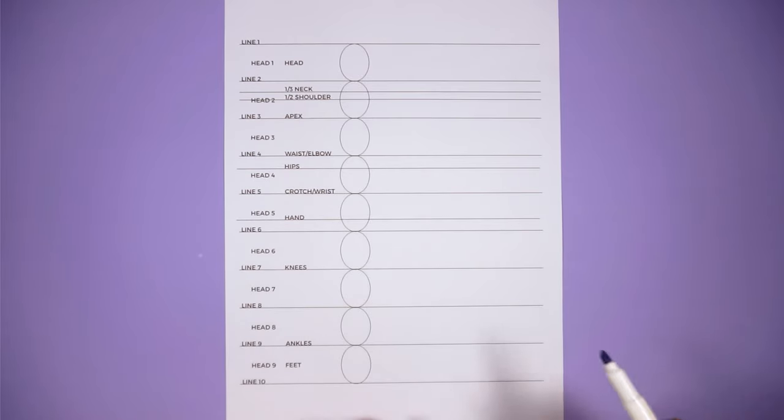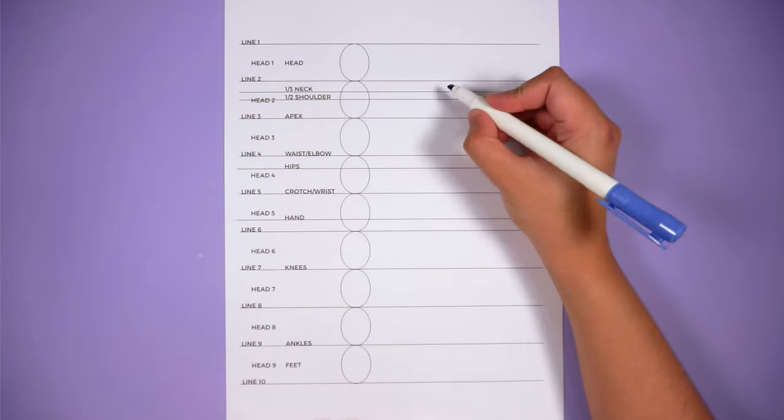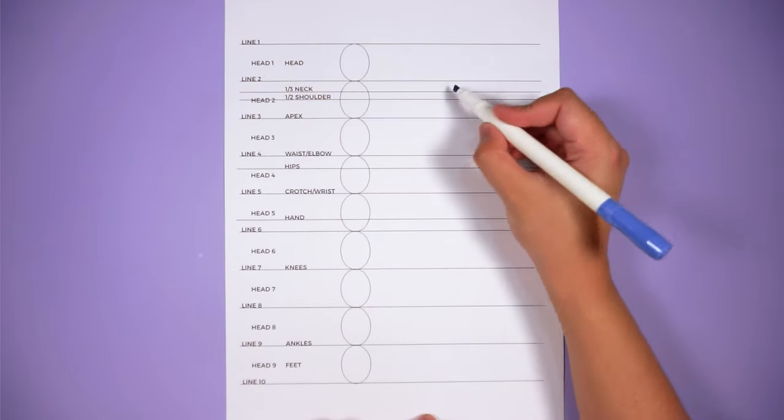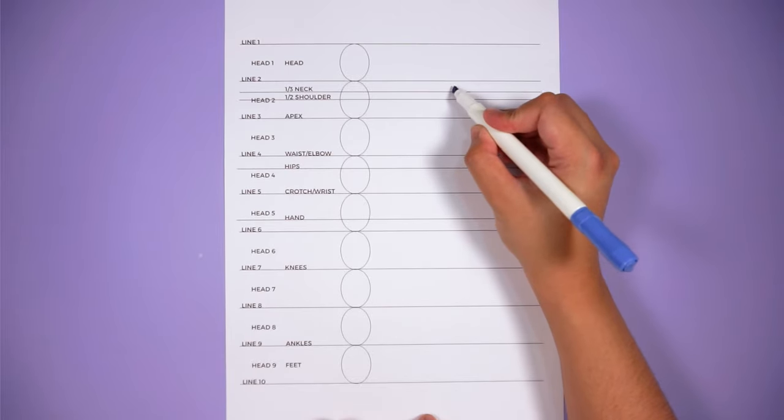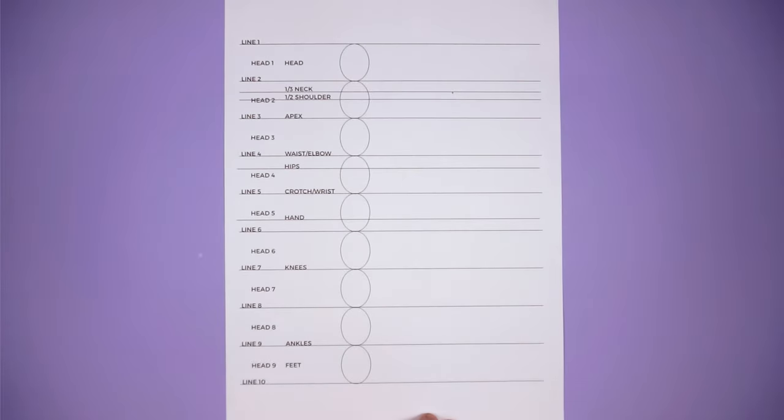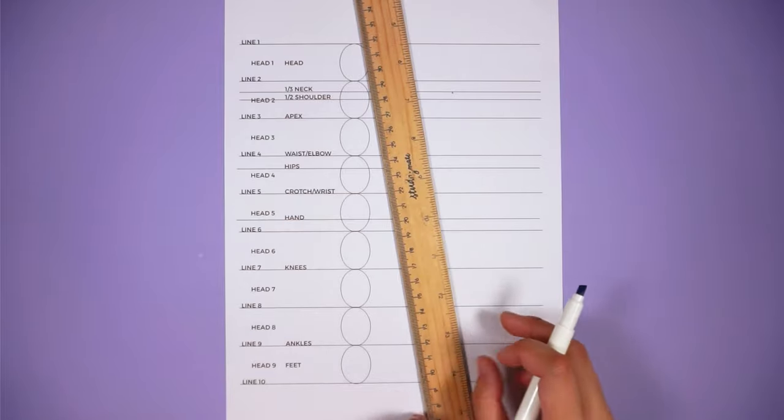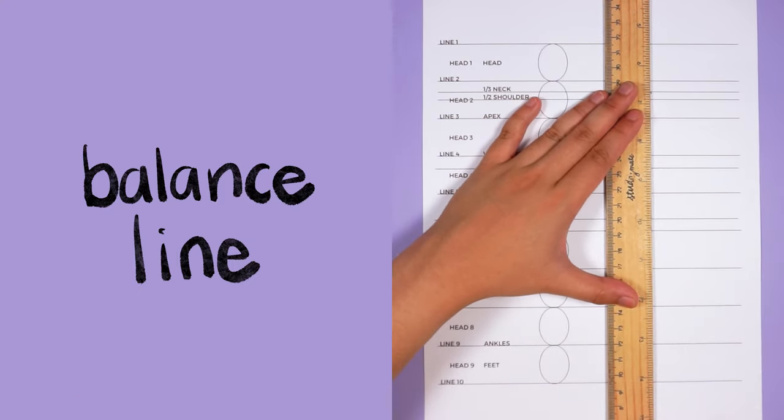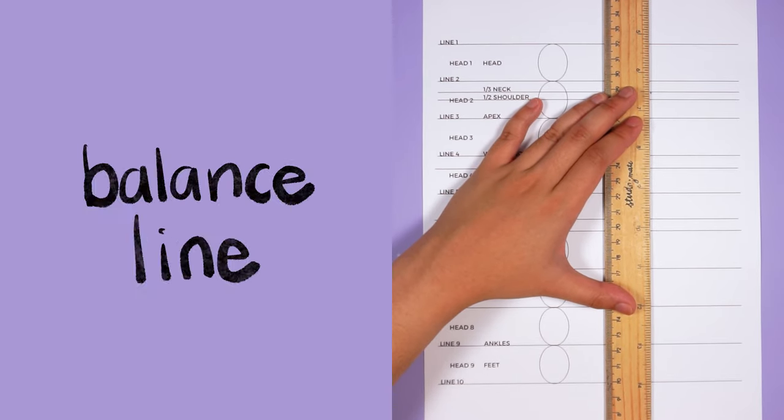I'm going to start drawing a vertical line that starts from the neckline, which is one third down head number two. So this line extends all the way down to the bottom of the feet, which is line 10, and we call this line the balance line. This will act as a center axis for our other guidelines.